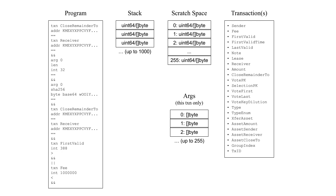A Teal program has access to a world like this. It has its program instructions, which execute one after another. It has a stack — Teal is a stack language, like an old calculator or Forth — and each stack value can either be a 64-bit unsigned integer or a byte string. It has scratch space; you can load and store between the stack and the scratch space as a way of storing intermediate values, which alleviates the need for certain stack shuffling operations.